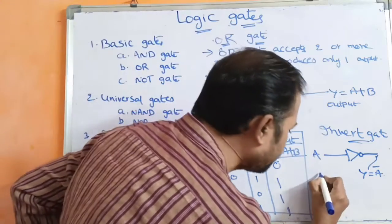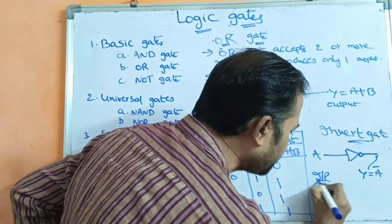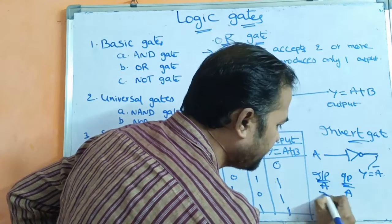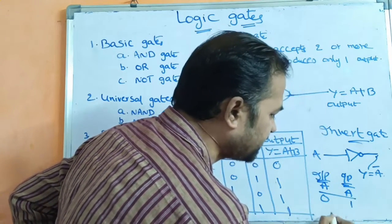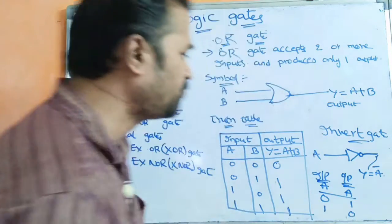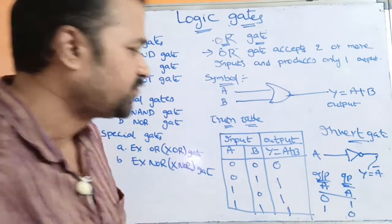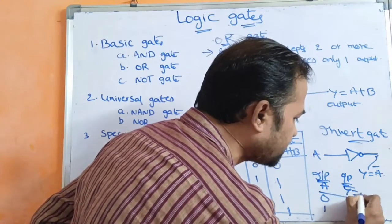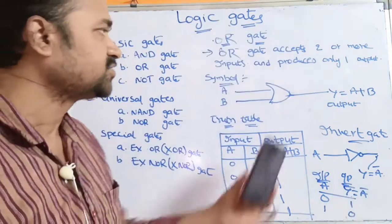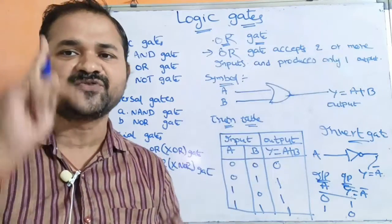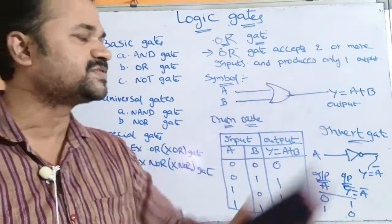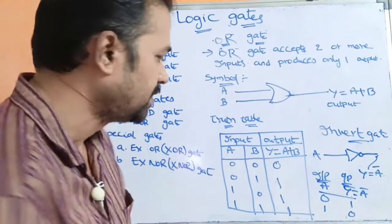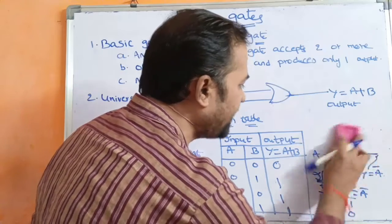Now let us see the truth table for NOT gate. Here we have only one input that is A, and it produces one output that is A bar. If the input is 0, output is 1. If the input is 1, then the output is 0. So invert gate accepts only one input and produces only one output. If the input is A, then the output is Y is equal to A bar. That is about basic gates.